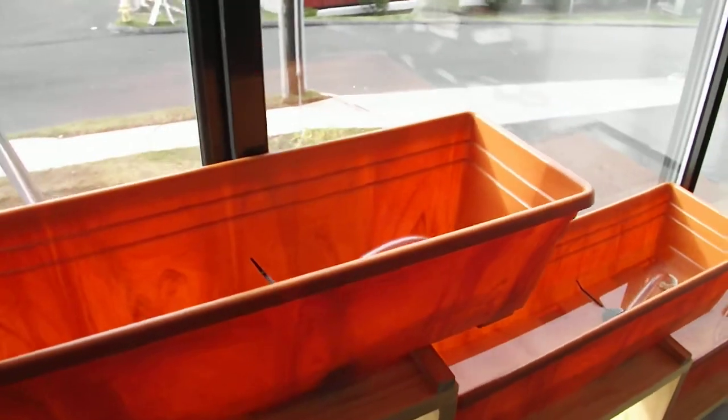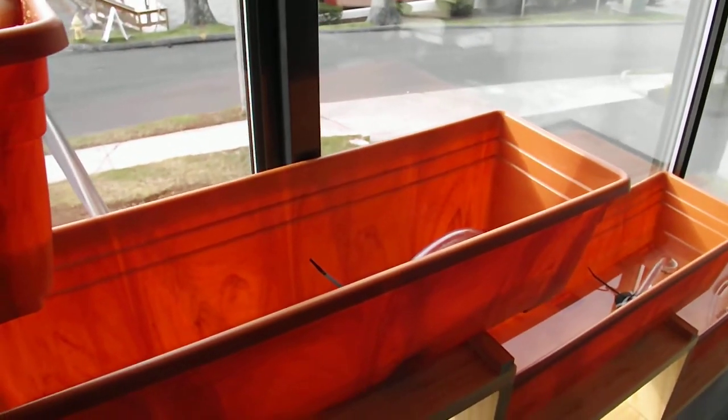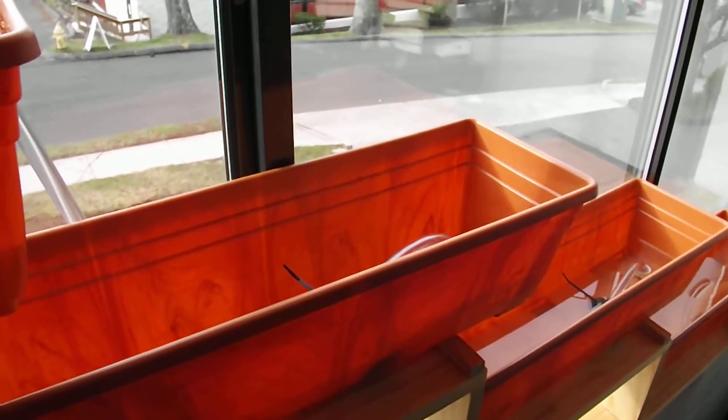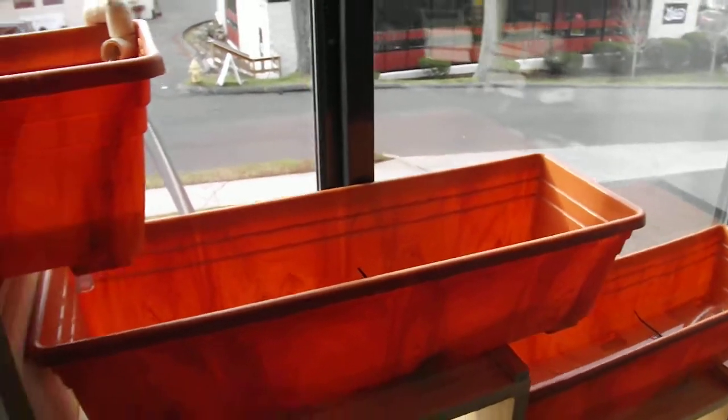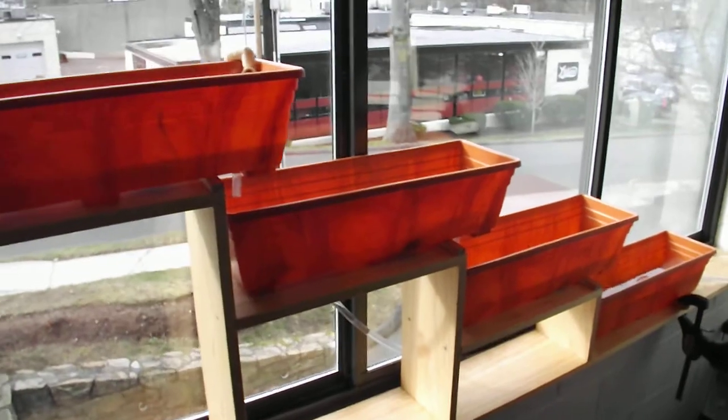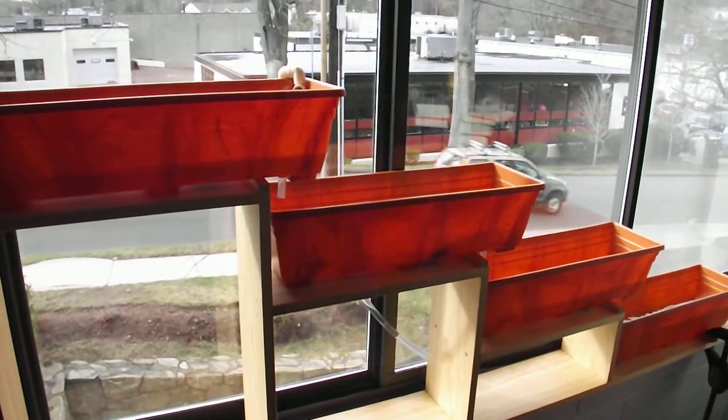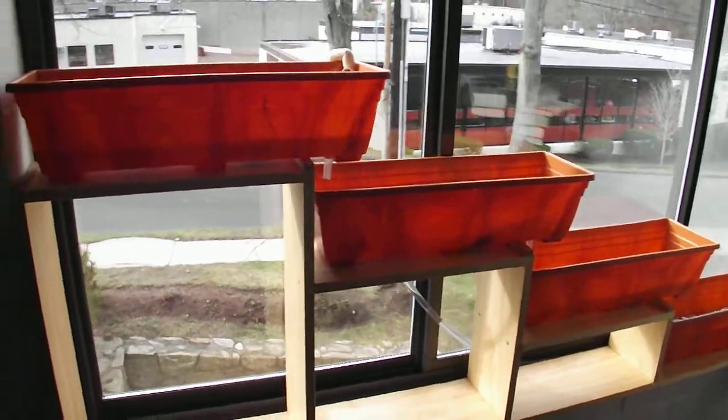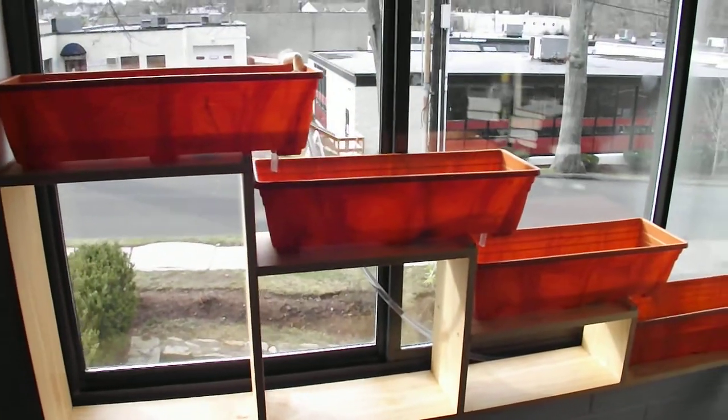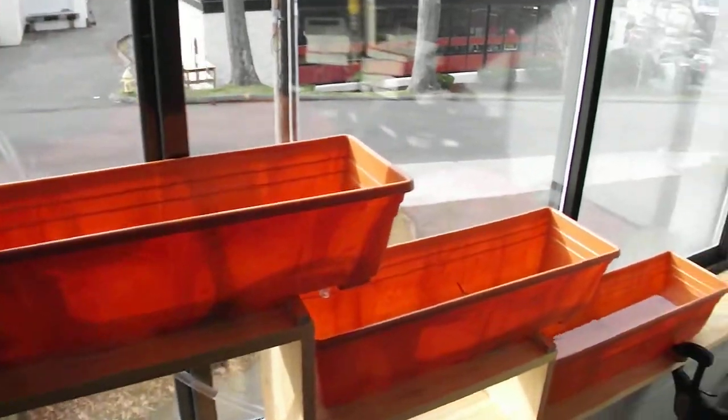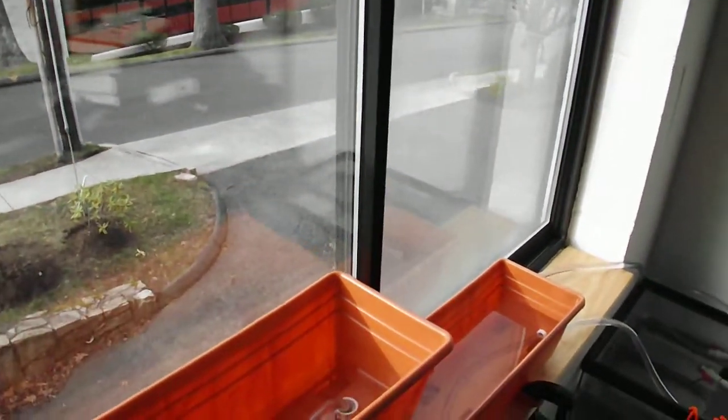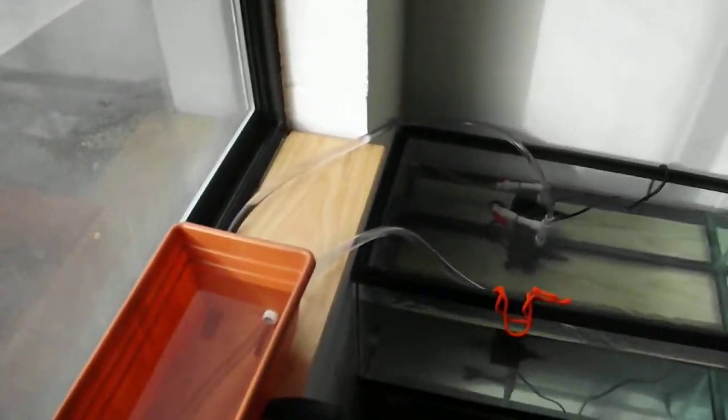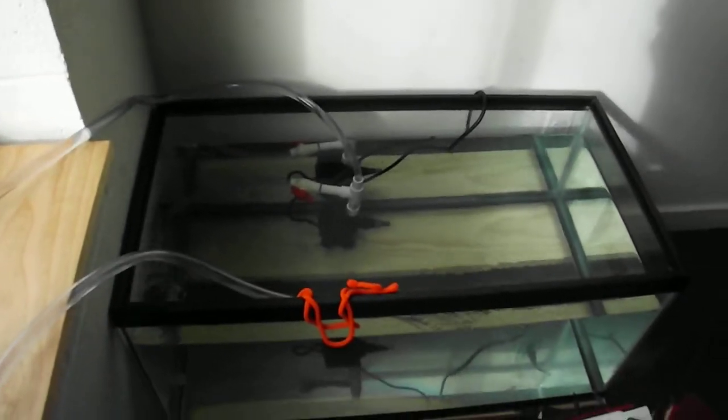All right, so here is a little project I've been working on, and it's an aquaponics arrangement. It uses some really basic, simple plastic window boxes from Lowe's on a little wooden base as the grow beds, and it drains down into a 40-gallon aquarium.